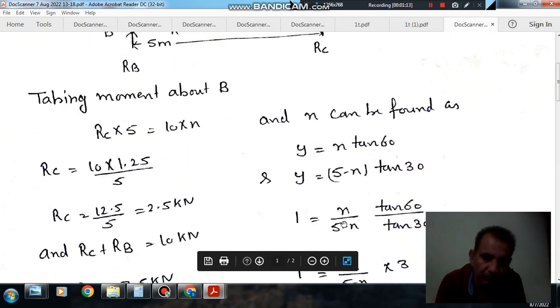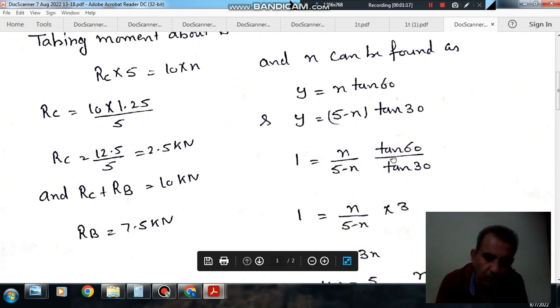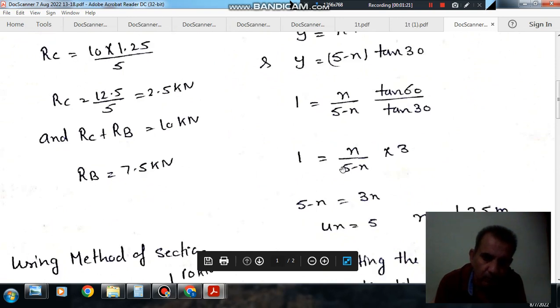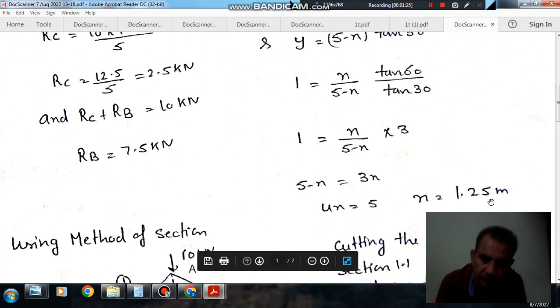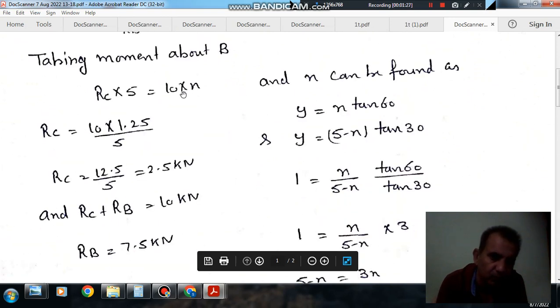So dividing, we have x divided by 5 minus x equals tangent 60° by tangent 30°, which is 3. So 5 minus x is equal to 3x, or x is equal to 1.25.